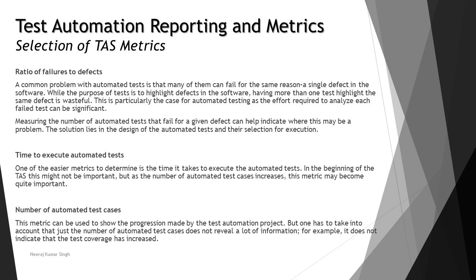The next matrix is time to execute automated tests. Time is really important — if automated tests take a long duration to execute compared to manual testing, it becomes a challenge. We have to keep tracking the time taken to execute, because in the beginning it may not be critical, but as the number of automated test cases increases, this metric becomes quite important since more test cases require more execution time.